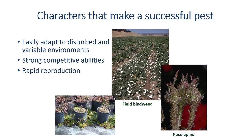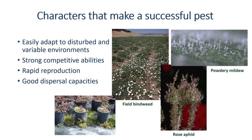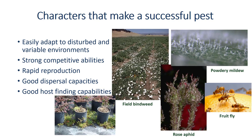Pests have good dispersal capabilities. Powdery mildew produces spores that disperse in the wind and affect a wide variety of hosts. Lastly, successful pests have good host-finding capabilities. Not only can insects see the plants, some plant-feeding insects can detect plant chemicals to hone in on the plant. I'm sure we've all experienced fruit flies a few hours after eating a banana.